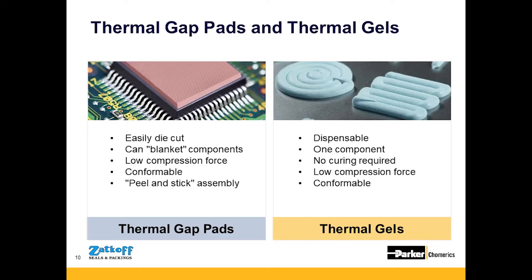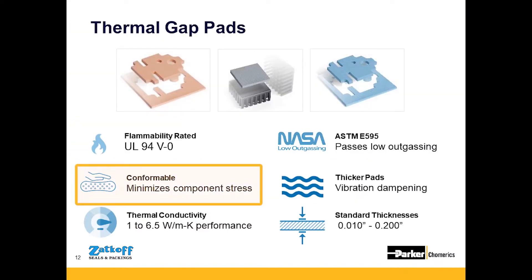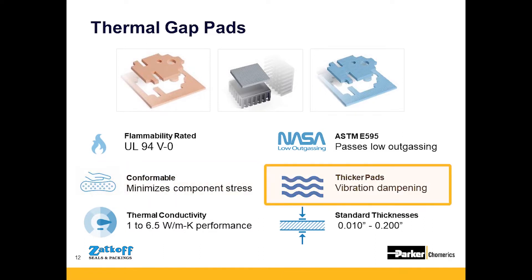Thermal gap pads and thermal gels are the two most common types of TIMs. Most gap pads are designed to be soft and reduce component stress. The advantage of this conformability is that it provides vibration dampening and gives gap pads a large enough compression range to take up tolerances. We recommend gap pads be compressed anywhere from 5% to 40% of the total gap height.